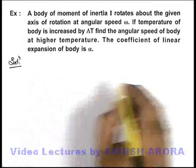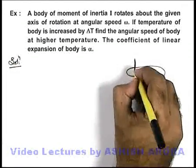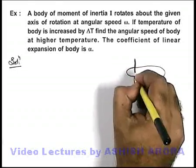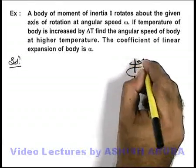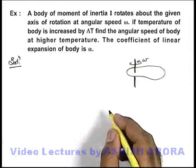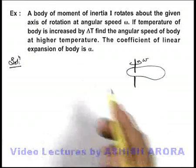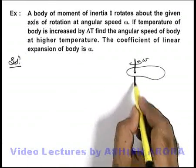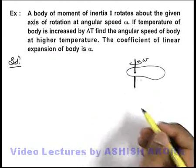Let's first draw the situation. Say we are having a body which is rotating about a given axis of rotation at an initial angular speed ω. In this situation, as per the question, no external force or torque is acting on the body.